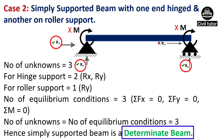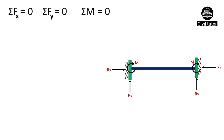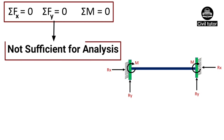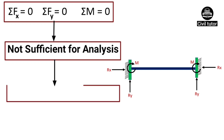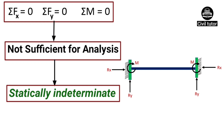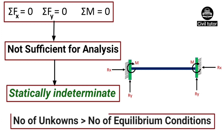On the other hand, if the equations of static equilibrium do not suffice the analysis of a structure, the structure would be categorized as a statically indeterminate structure. In simple words, if the number of unknowns in a structure exceeds the number of equilibrium conditions, the structure is categorized as an indeterminate structure.